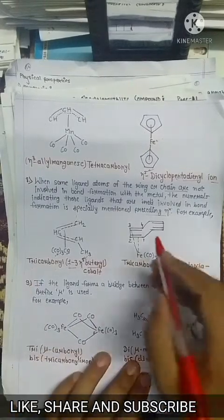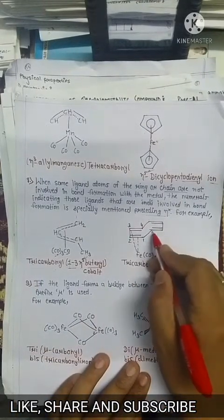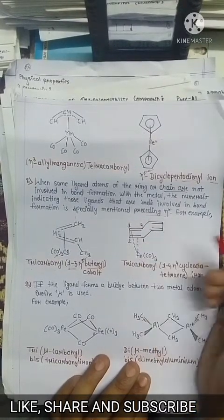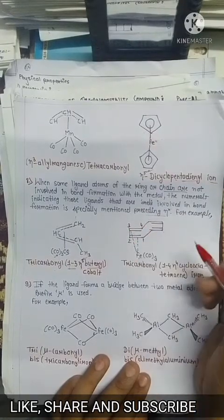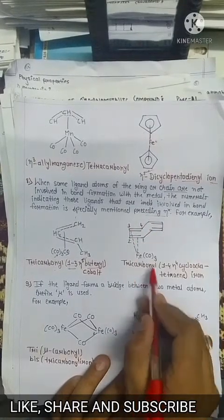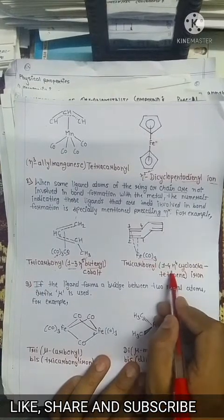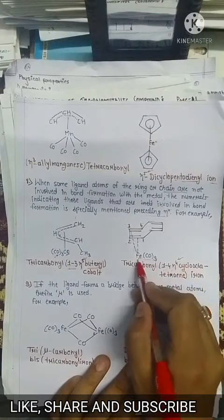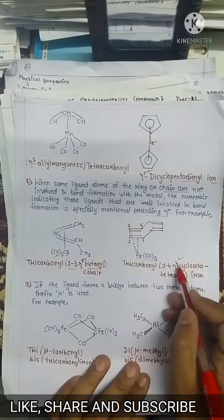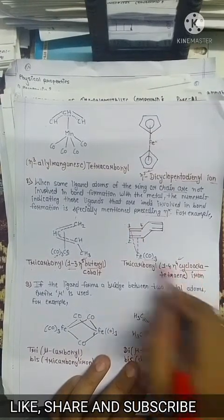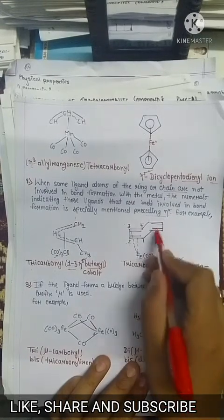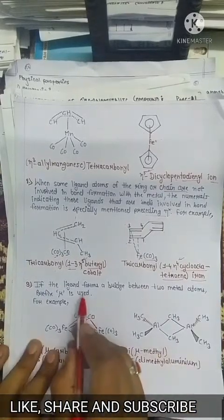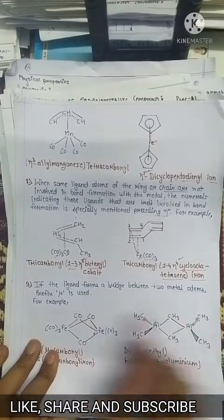Just see this example: this moiety contains 8 carbon atoms, but this iron forms bonds with only the 1st, 2nd, and 4th carbon atoms. So the name is written as tricarbonyl, then 1,2,4-η⁴-cyclooctatetraene iron. Here 4 indicates that iron is attached to 4 carbon atoms of the cyclooctatetraene ring.